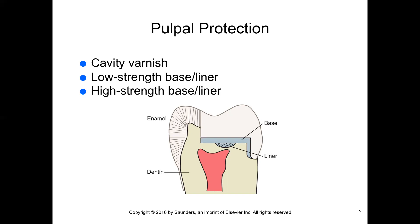High-strength base or liners provide thermal insulation and support for restorations. Cements used as a base are mixed to a secondary consistency, which is a thick putty-like consistency. In preparations with an estimated two millimeters or less of dentin remaining, a base is often recommended. This figure is a line drawing of cement, liner, and base — you can see where the liner is and how close it is to the pulp.